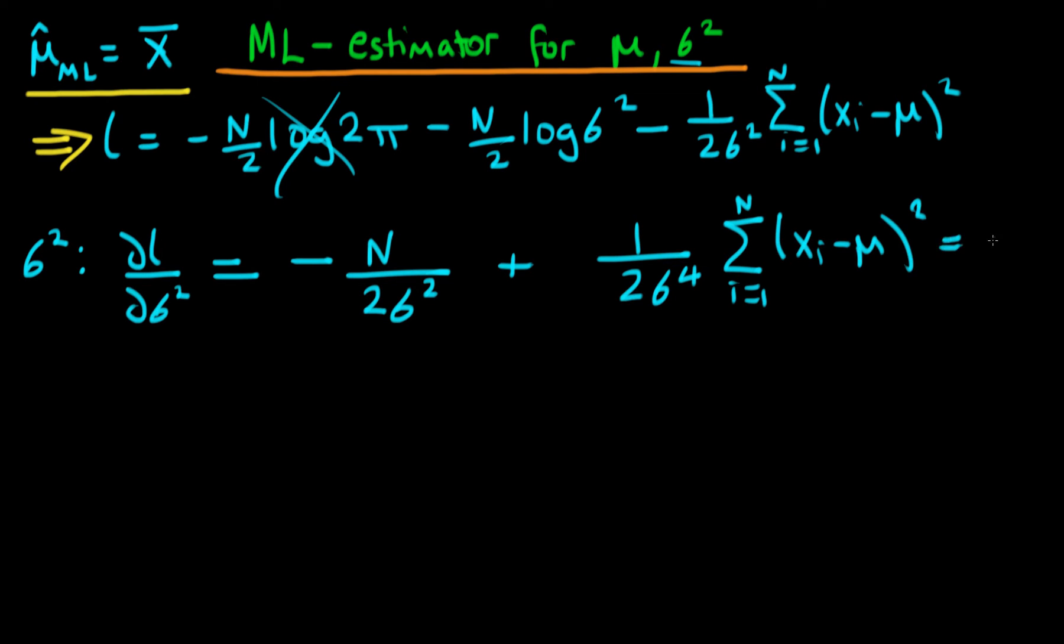Setting that equal to 0 actually defines our maximum likelihood estimators for sigma squared. And note that we've got this minus going to a plus here because of the fact that essentially we're differentiating x to the power minus 1 here.